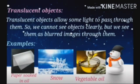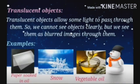Next, translucent objects allow only some light to pass through them — not all light like transparent objects. So we cannot see objects clearly; we see them as blurred images through them. In Tamil, blurred means 'mangalana.' For example: paper soaked in oil, snow, and vegetable oil.